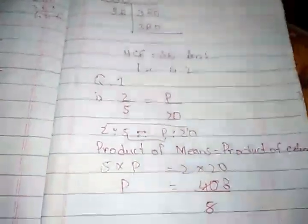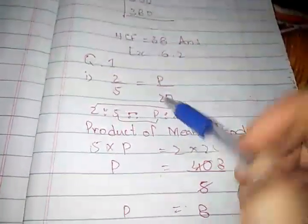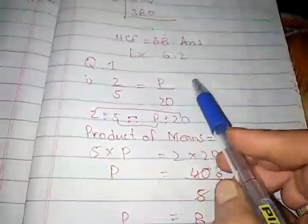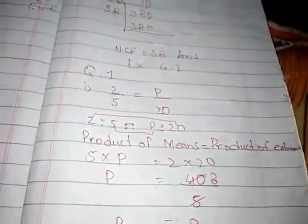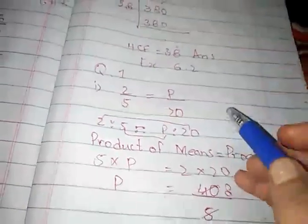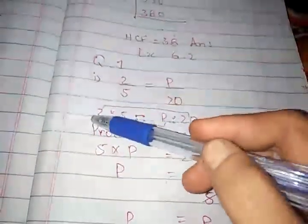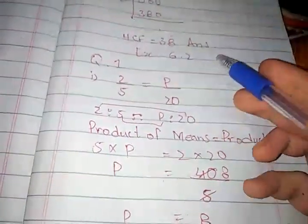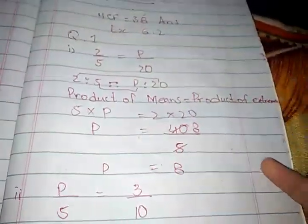Question number 1 is 2 by 5 equals P by 20. We have to find the value of P. Students, we use proportion to verify — we use the following formula: product of means and product of extremes. In a proportion, the second and third values are called means and the first and fourth values are called extremes. We find the product of means and product of extremes.